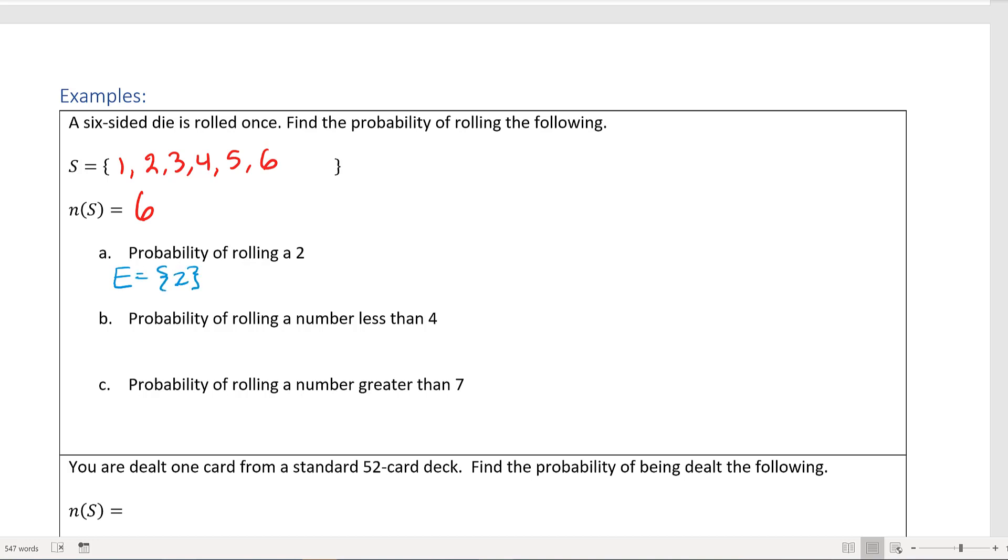Part A: find the probability of rolling a 2. So if my event E is the sample space of just {2}, we can say that the number of E is only 1 because there's only one way you could get a 2. So my probability of that event is going to be n(E) over n(S)...